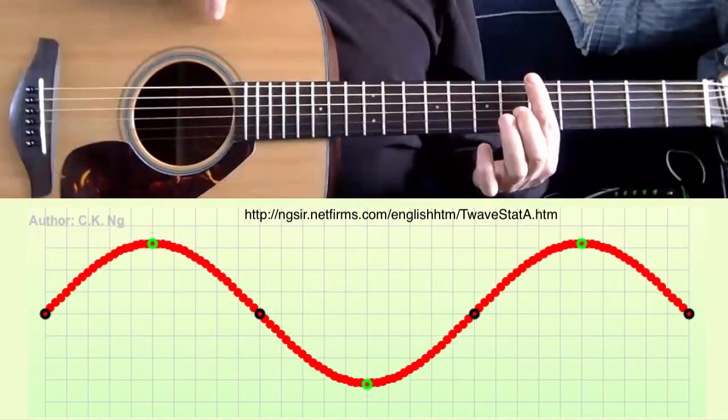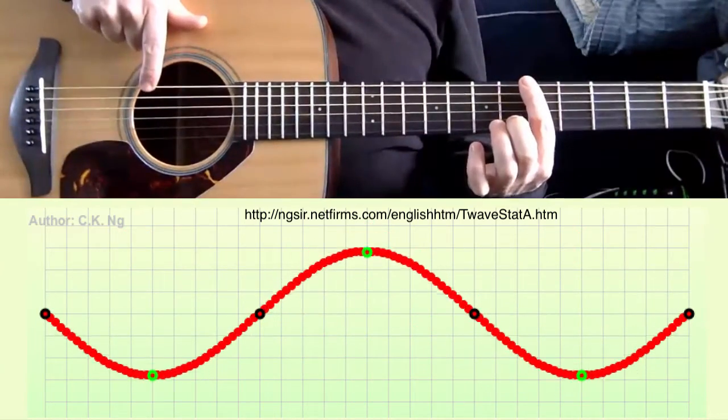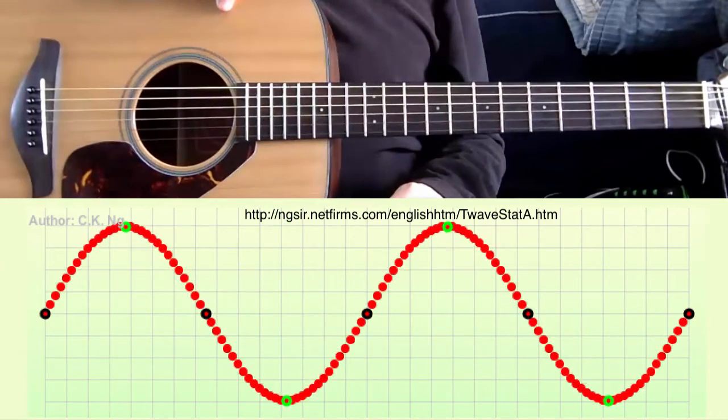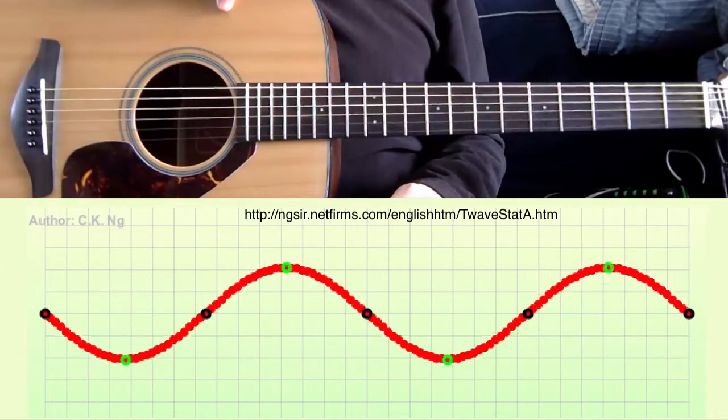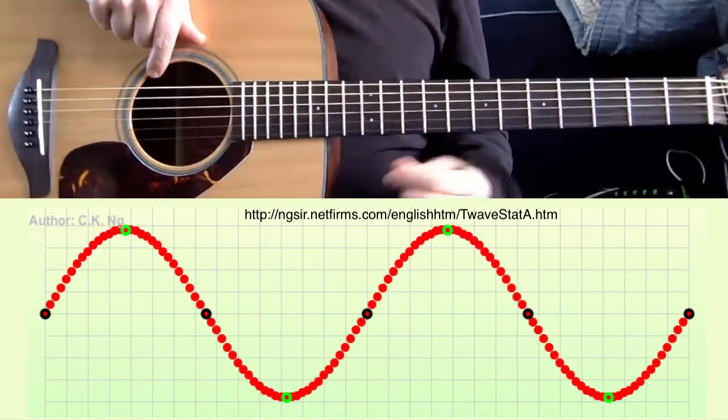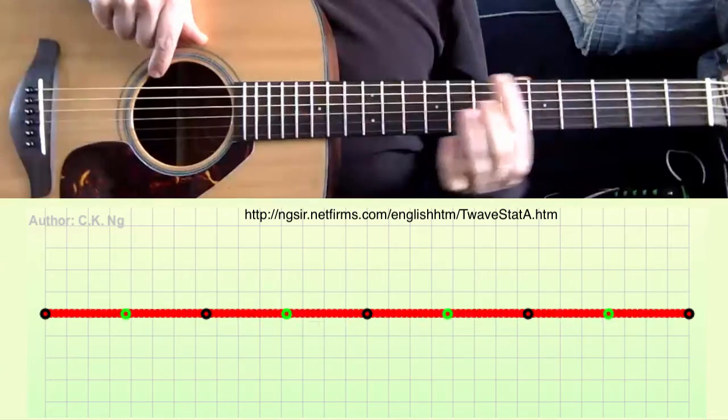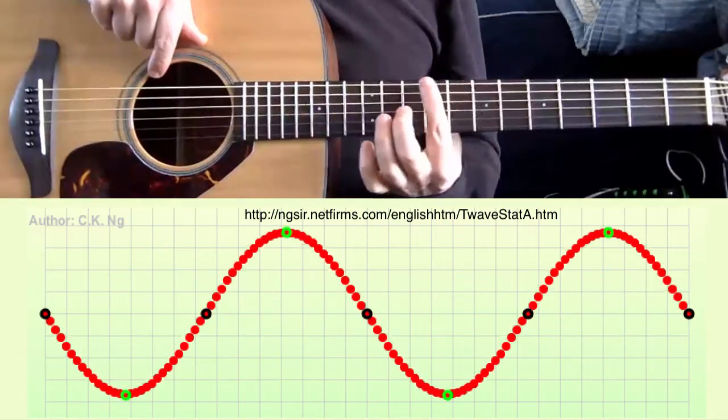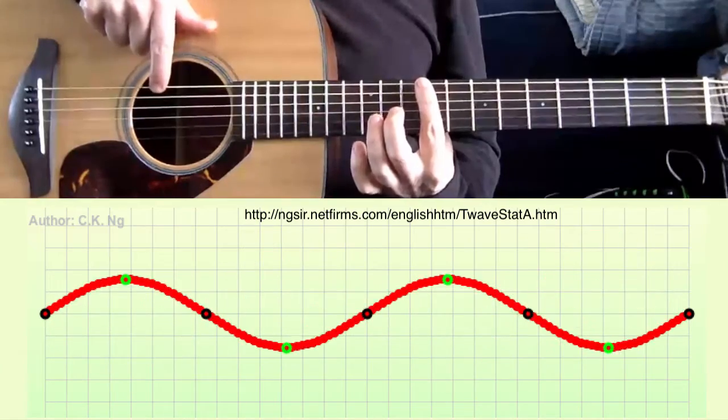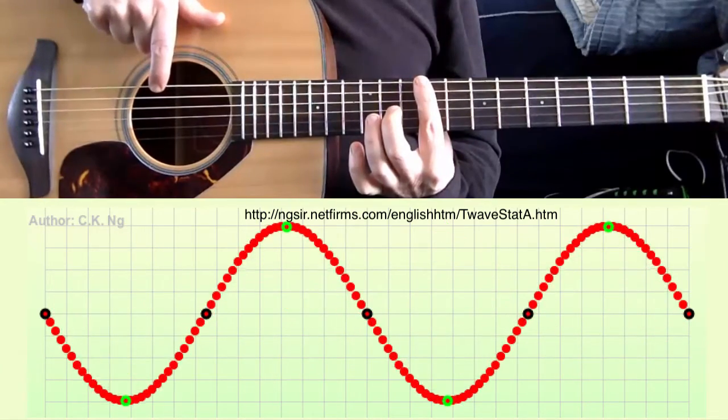Next, by touching it one quarter of the way, I can create the fourth harmonic. And then I can touch it one fifth of the way, but I'm going to touch it. It sounds a little bit better if I touch it up in here. But this is a node that divides it up into five pieces right here, the fifth harmonic right here.